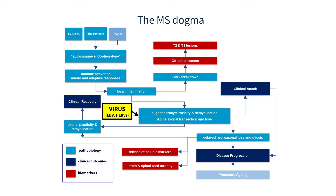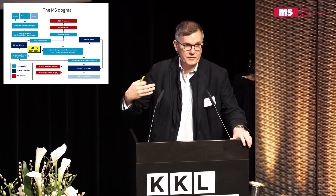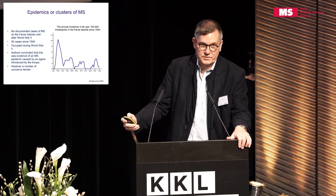The current dogma is that genetics, environment, and chance produce autoimmunity, which triggers a focal inflammatory lesion that damages the oligodendrocyte-axon unit, causing a clinical attack. This leaves behind damage causing disease progression. But what's missing is that all the inflammation could be secondary. What may be causing this is a primary viral infection of the oligodendrocyte, with everything else secondary. There are clues in the literature to this.